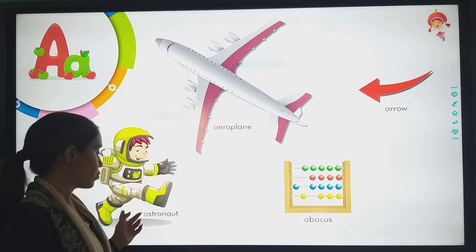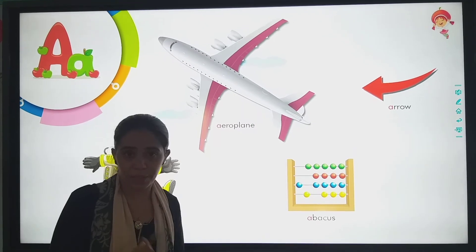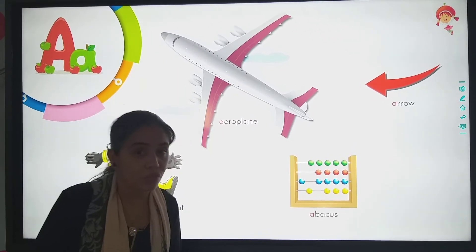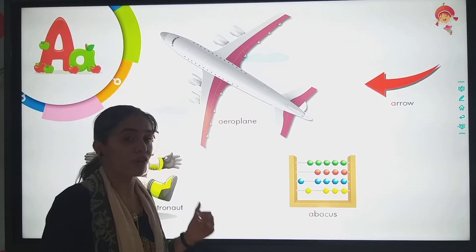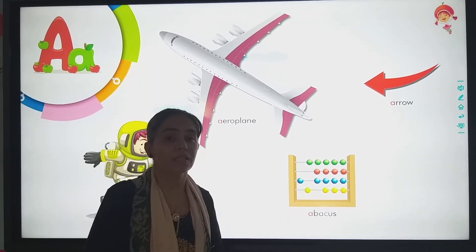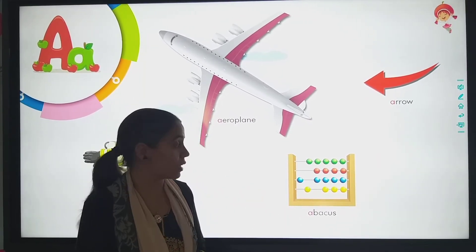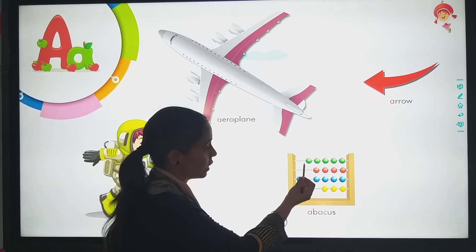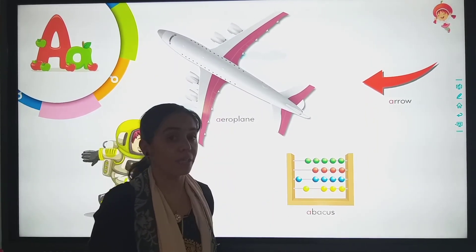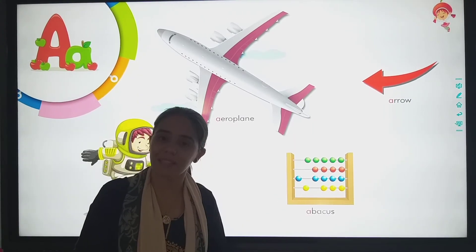Arrow hote hai na ki hume left me jana hai, straight jana hai, right me jana hai. Then astronaut. Space mein kaun jate hai? Hum jaa pahengi hai? Nain. Ye jate hai — astronaut. A for astronaut. Then A for abacus. Aapke paas slate hai na bacho? Us mein counting beads hote hai. One, two, three, four, five. Yeh counting beads hai. Toh isko hum kya bolte hai? Abacus.